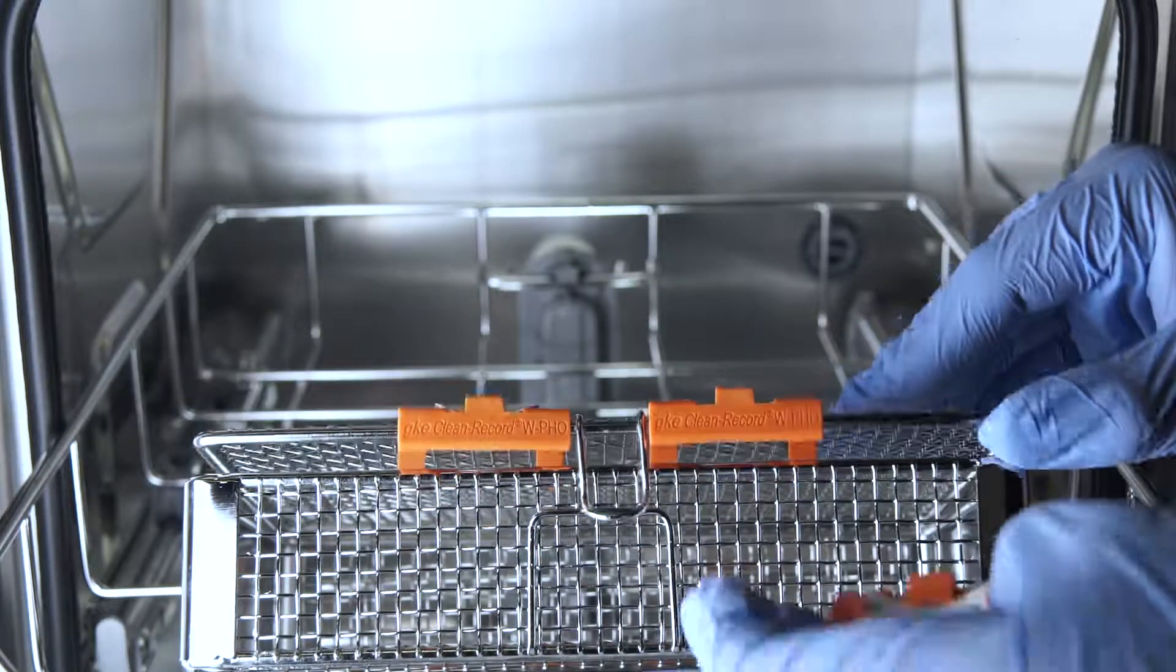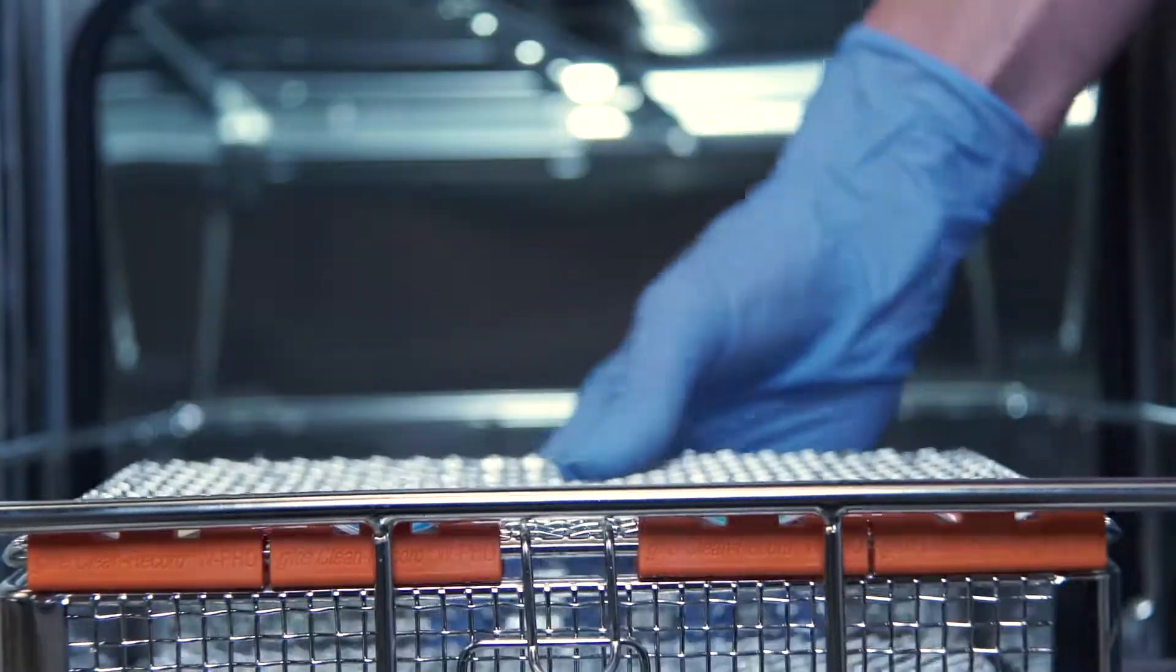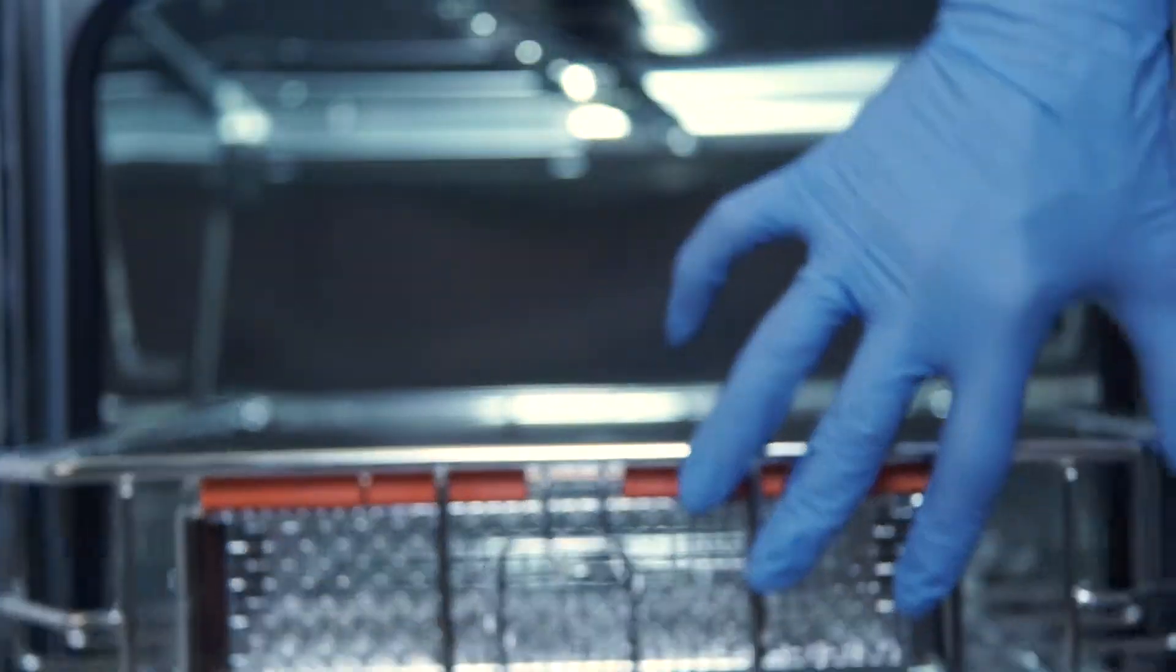Clip the four clips to the lid of a basket with the indicators facing up and position the basket on the middle rack at the front of the washer with the indicators visible through the window.